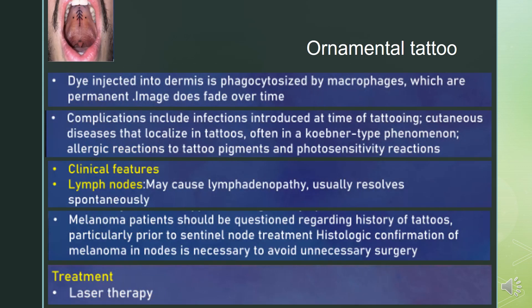For ornamental tattoos, dye injected into the dermis is phagocytosed by macrophages, which is permanent; however the image does fade over time. Complications include infections introduced at the time of tattooing, cutaneous diseases that localize in tattoos (often in a Koebner-type phenomenon), allergic reactions to tattoo pigments, and photosensitivity reactions. It may cause lymphadenopathy, which usually resolves spontaneously.